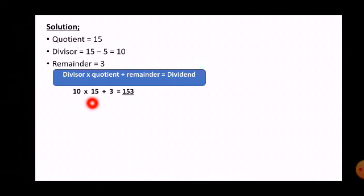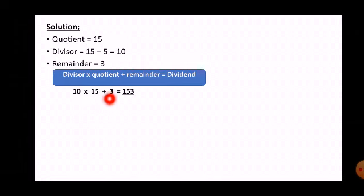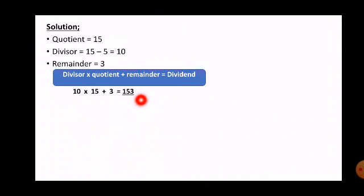Any number multiplied by 10 — you just need to put a 0 with that number. So 15 multiplied by 10 equals 150. Now add 3 to it: 150 plus 3 equals 153. You should also solve this question on your rough notebooks. So 150 plus 3 equals 153, and here we have our dividend.